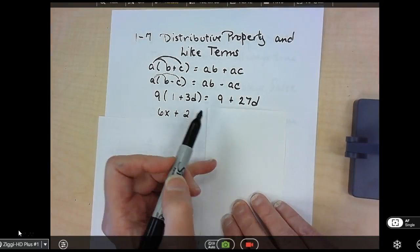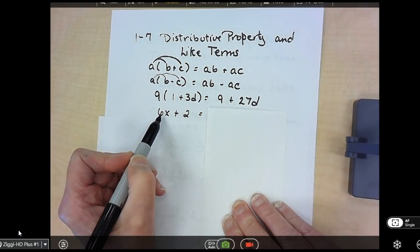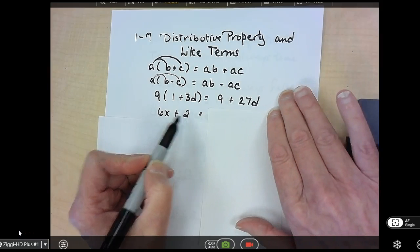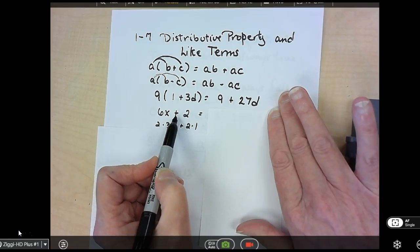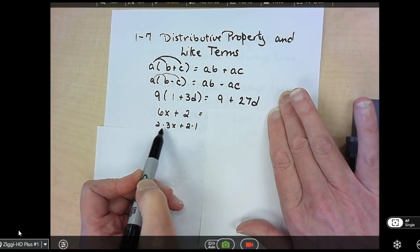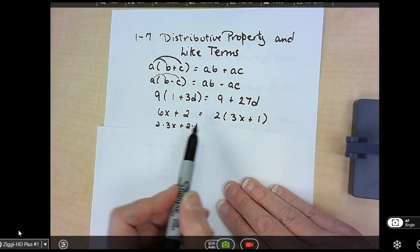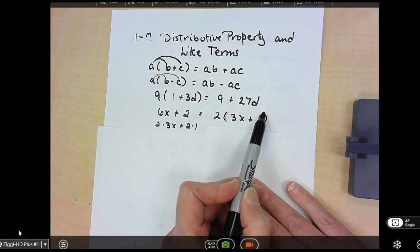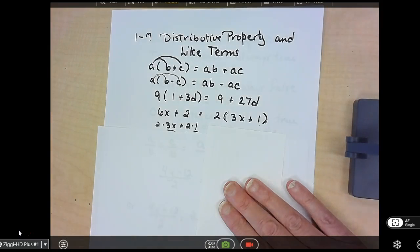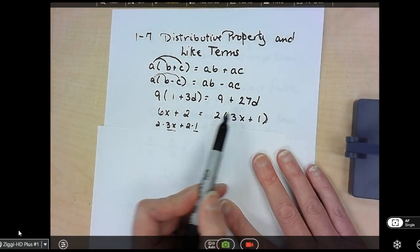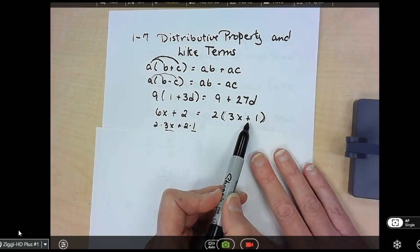We can also go backwards from this form to the factored form. So if I look at 6X plus 2, well, 6 is 2 times 3X. 2 is 2 times 1, so there's a factor of 2 in common that I can factor out. When I move it in front, I put parentheses, write the remainder of 3X and the 1 inside with the plus sign. If this had been a minus, the only difference is that plus would be a minus.